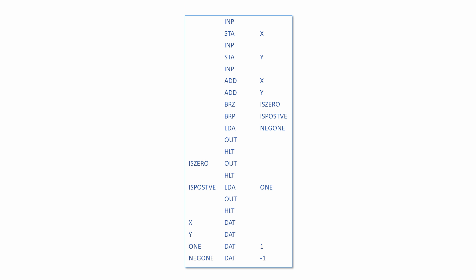Otherwise, we perform another test with the BRP operation. If the value in the accumulator is positive, we jump to a label where we load and output the number 1. Note that strictly speaking BRP will test for 0 or positive, but we know it isn't 0 when this instruction executes because the previous instruction would have already dealt with a 0 value. If neither branching instruction results in a jump, the accumulator must contain a negative value, so we output minus 1.